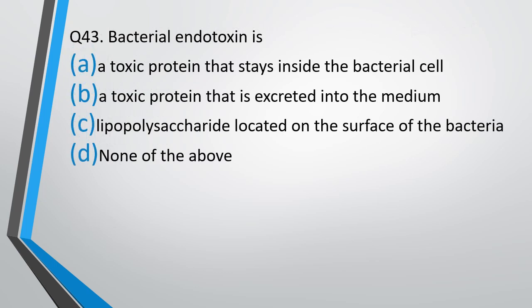Question 43. Bacterial endotoxin is: a toxic product that stays inside the bacterial cell, a toxic protein that is excreted into the medium, a lipopolysaccharide located on the surface of the bacteria, or none of the above? The correct answer is option C — it is a lipopolysaccharide located on the surface of the bacteria.